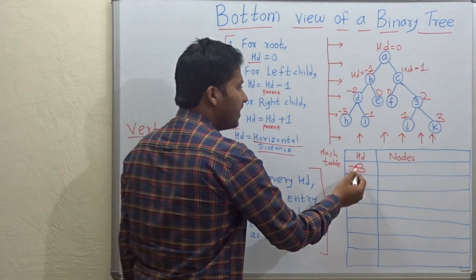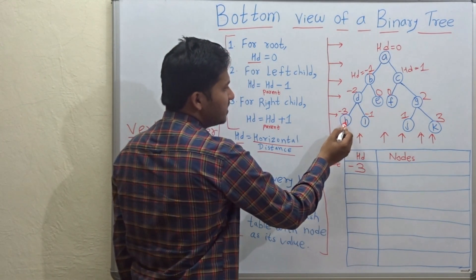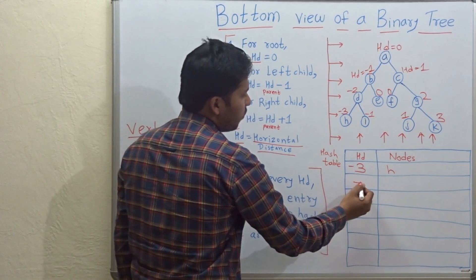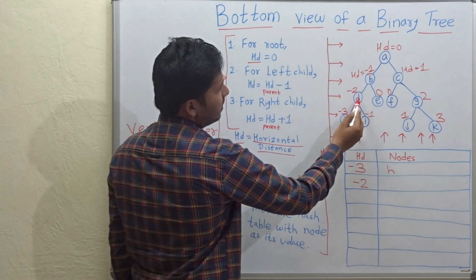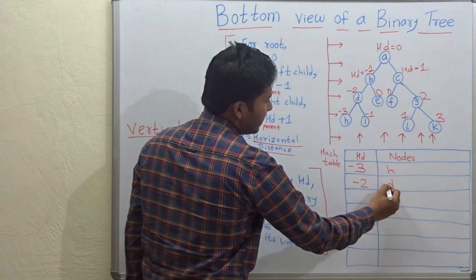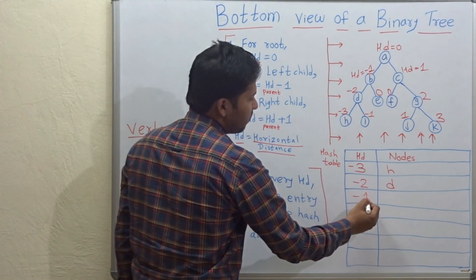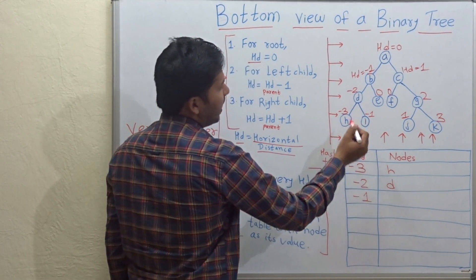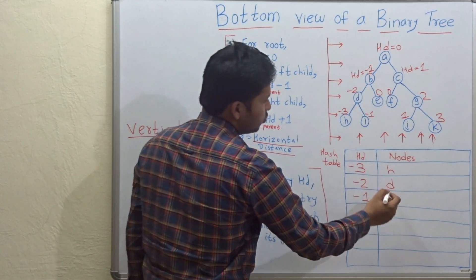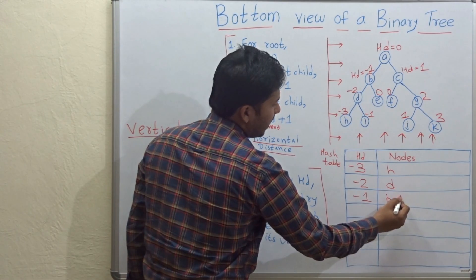For hd minus 3, only one node is there — that is h. Then for minus 2, only d is there. Then for minus 1, there are two nodes: b and i.